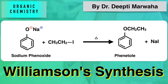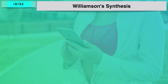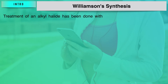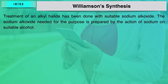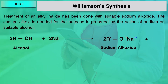In this video we will see an important method for preparation of ethers — Williamson's synthesis. This is a method whereby treatment of an alkyl halide is done with a suitable sodium alkoxide. The sodium alkoxide needed is prepared by the action of sodium on a suitable alcohol, resulting in the formation of sodium alkoxide with the liberation of H2.